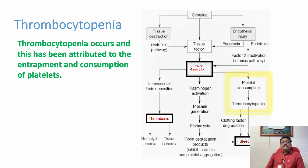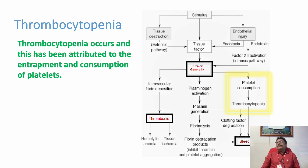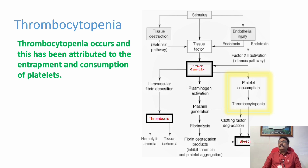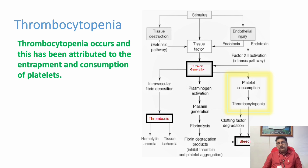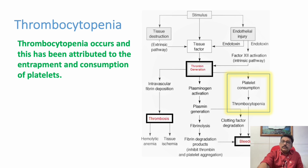Thrombocytopenia occurs because of consumption of platelets — whenever a clot forms, platelet aggregation is the initial step, then fibrin is added to form the clot. So both platelets and fibrin are present in almost all thrombi. Platelet-induced thrombosis is very common in arterial thrombosis, but in venous thrombosis also, platelets can be inside thrombi and can trigger multiple thromboses throughout the vascular system.